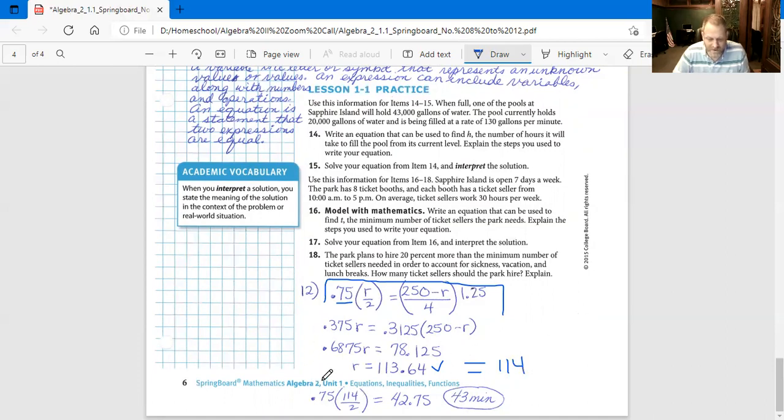We're going to round this to 114 because they're people. Now we're going to take 0.75 times 114 over 2, because we're replacing R in our formula with the 114. That equals 42.75, and we're going to round up because they're people, to 43 minutes. So go back up above and look at that problem on how to solve these.